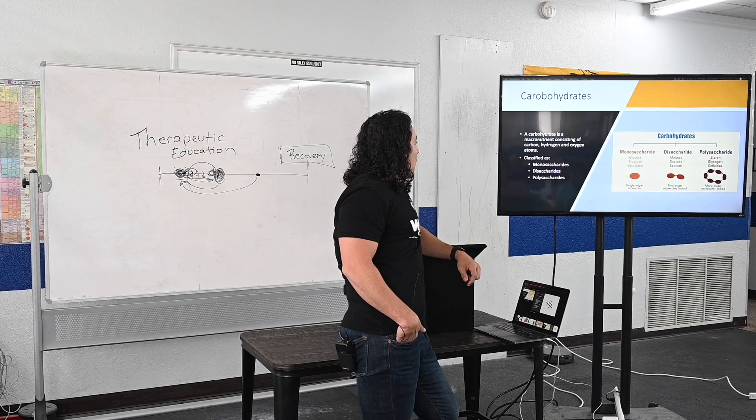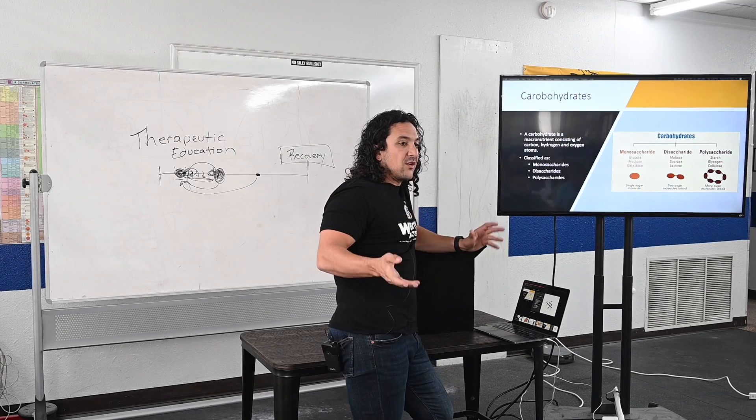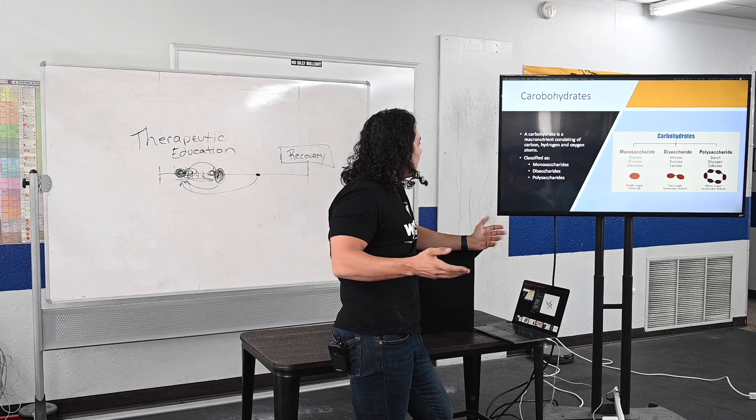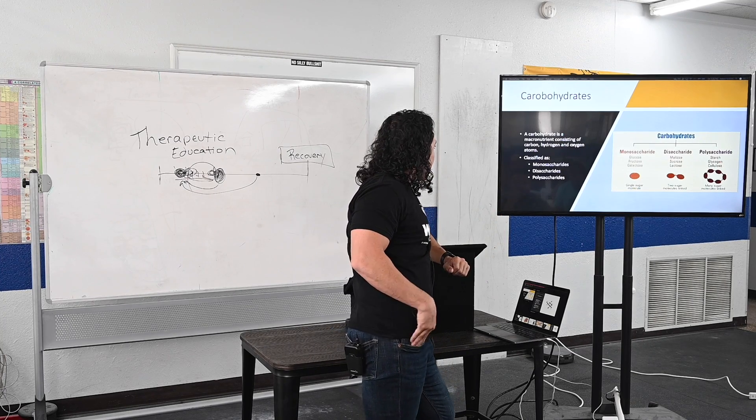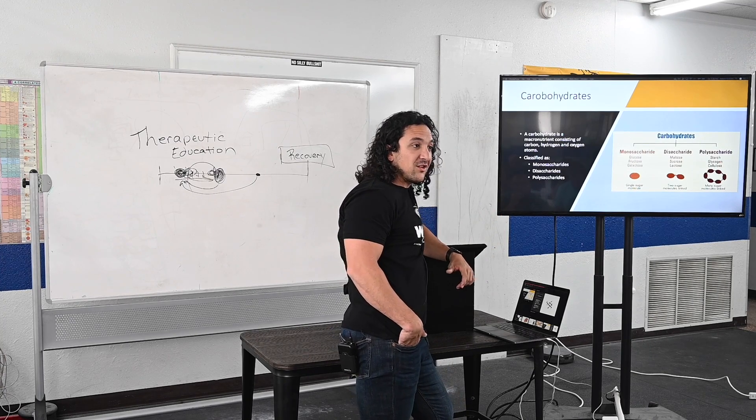A carbohydrate — so it's a hydrate of carbon, one way to think about it — consists of carbon, hydrogen, and oxygen.